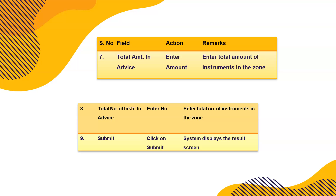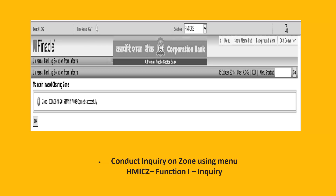When you open the zone, you have to enter how many instruments in total you have received and what the total amount is, so that after entering each instrument, if you miss one or add an extra check there will be an imbalance and you can find the difference. You have to enter the number of checks and total amount in the advice, then click Submit. The zone is opened. You enter the total instruments and total inward clearing received from all banks. You can also inquire using HMICZI.